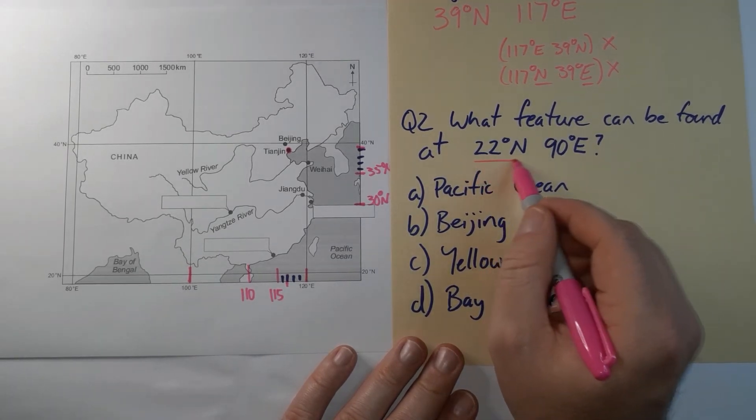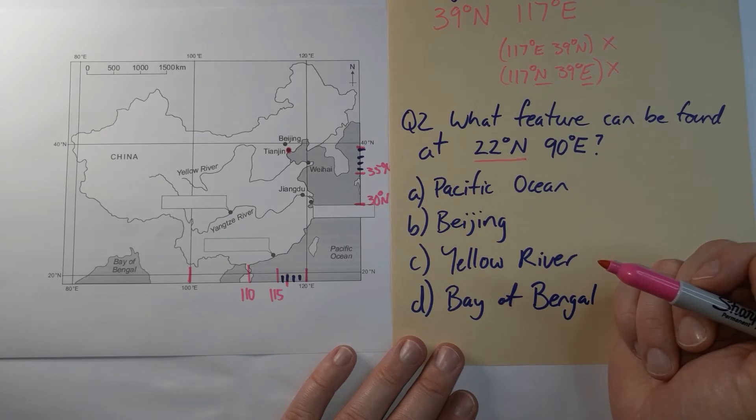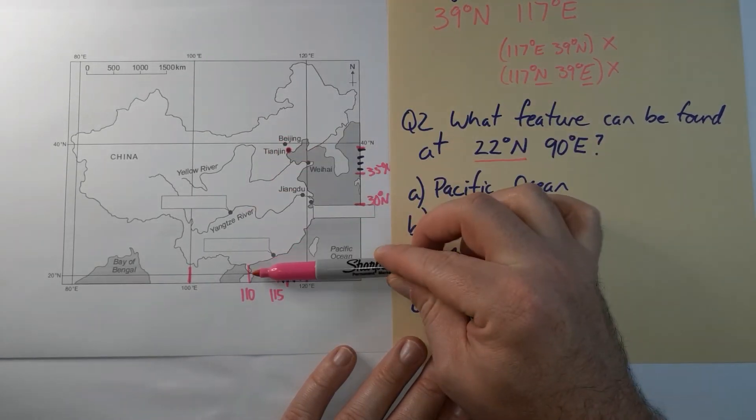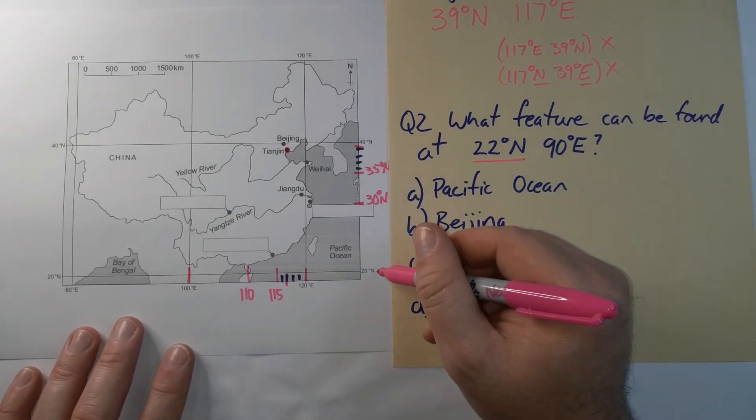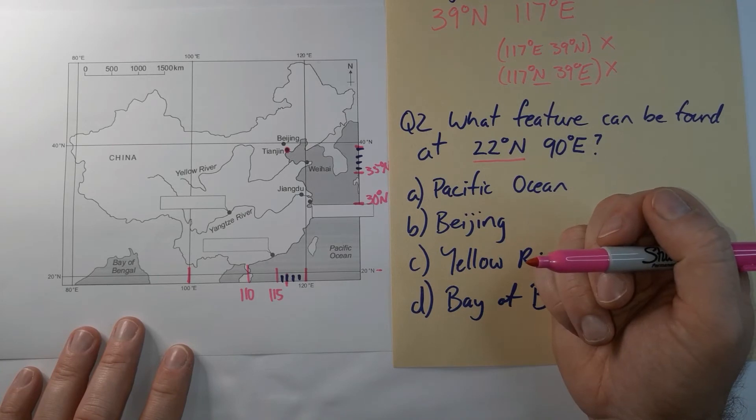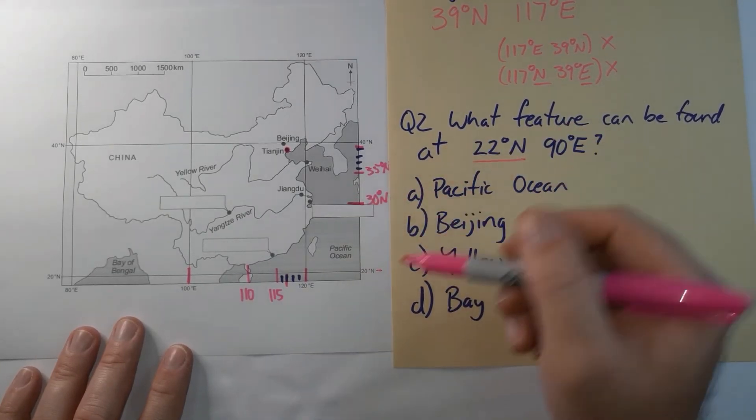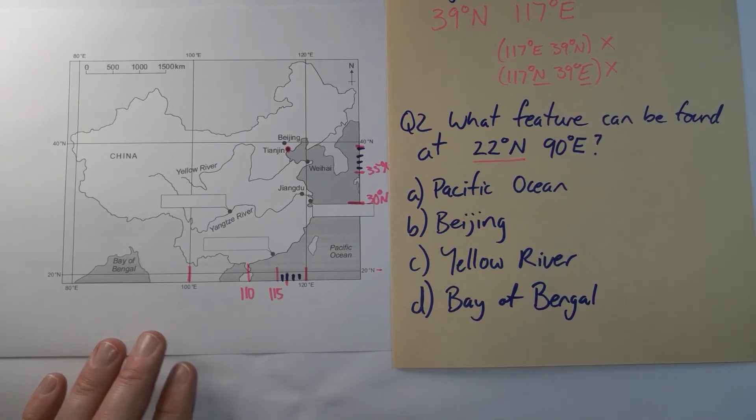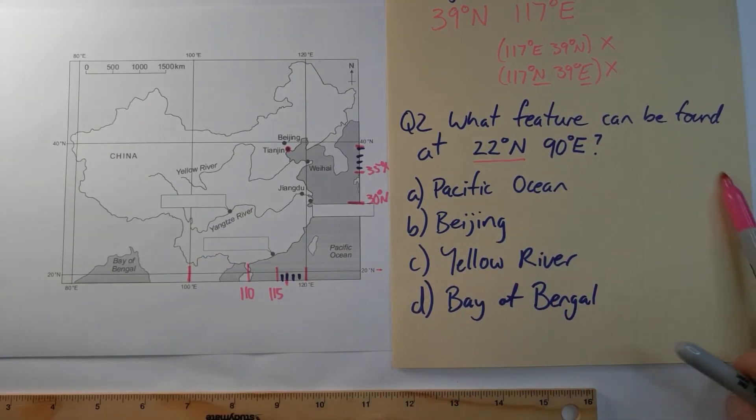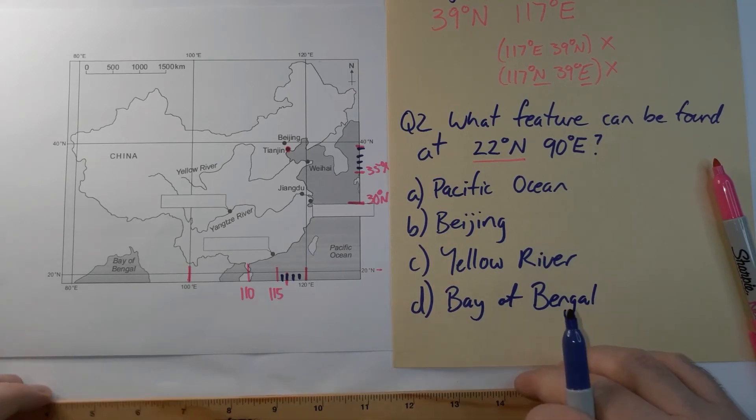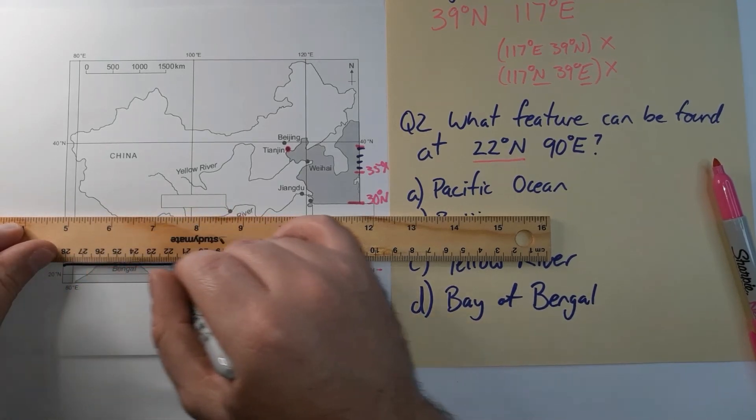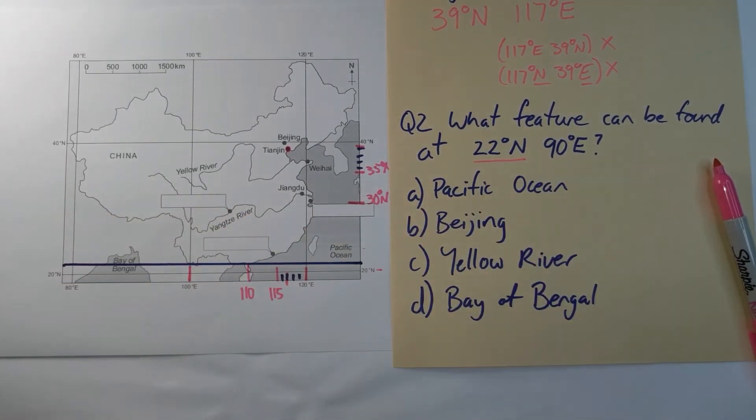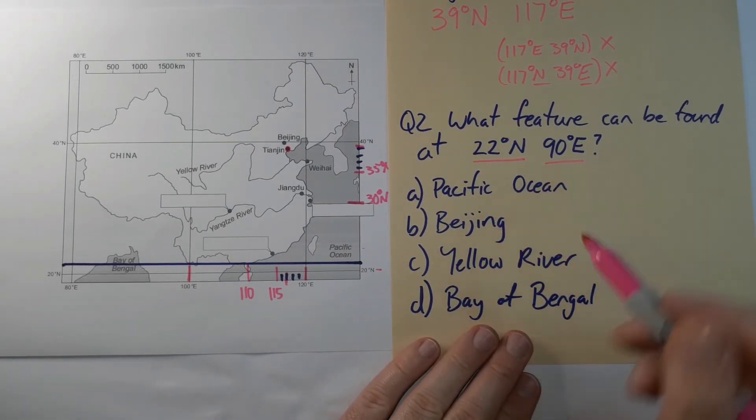So we're going to have to use our knowledge of latitude and longitude. So the first number is always latitude and the memory tool is Lat's lay flat so we're looking at the flat or horizontal lines first. So I need to find where 22 degrees would be. This line here at the bottom of the map is a 20 degree line and I've already marked up here is 30 degrees. So I might use my ruler and I'm going to use my purple pen and I'm going to put my ruler line which I think is about 22 degrees. So if I put my ruler where I think 22 is and I put a line across in purple then I'm going to do the same with longitude with 90 degrees east.